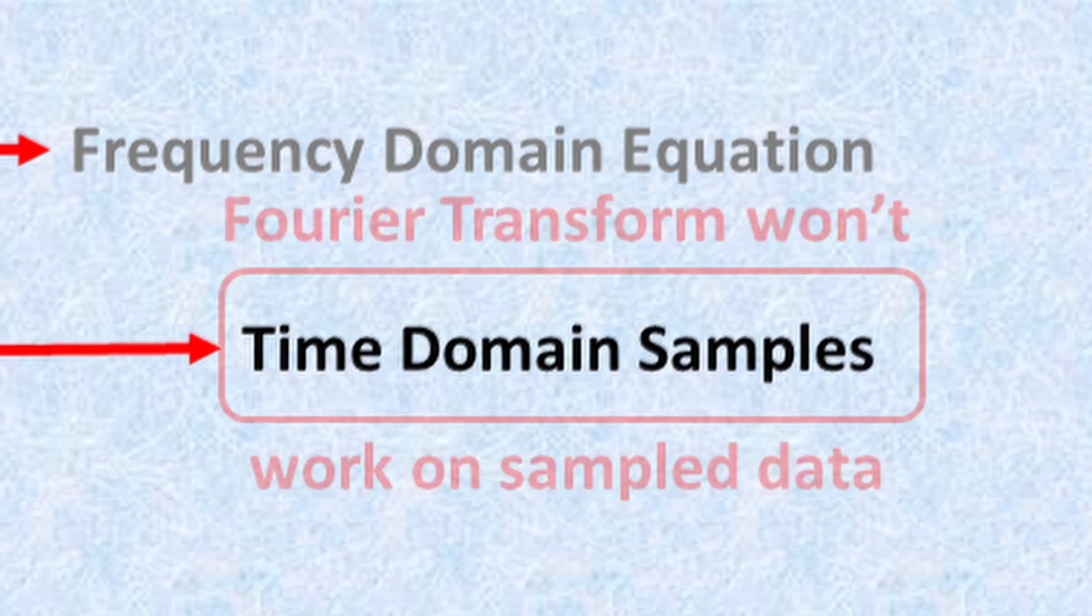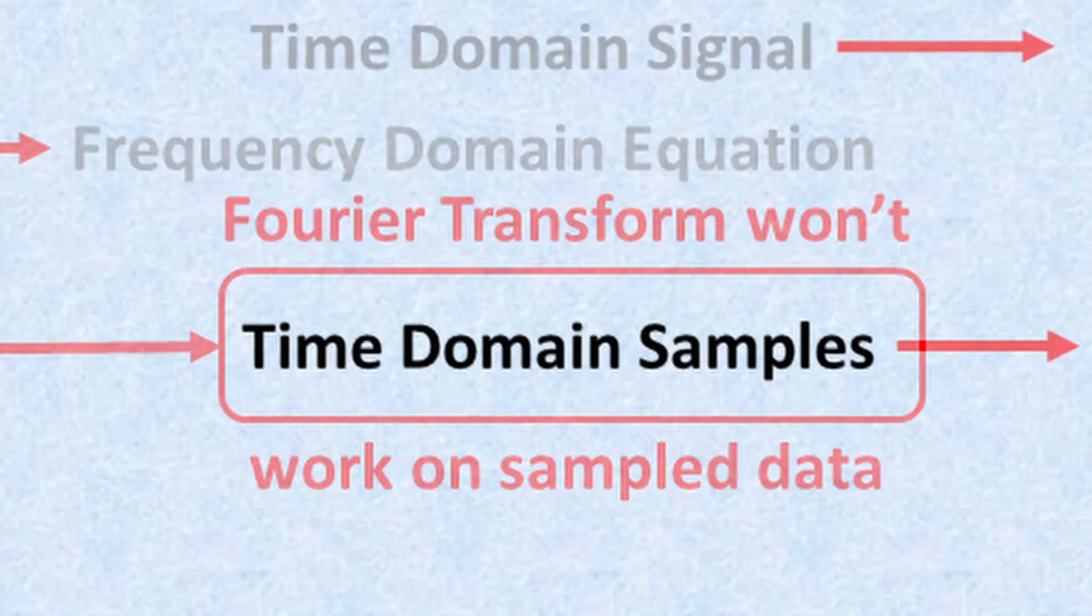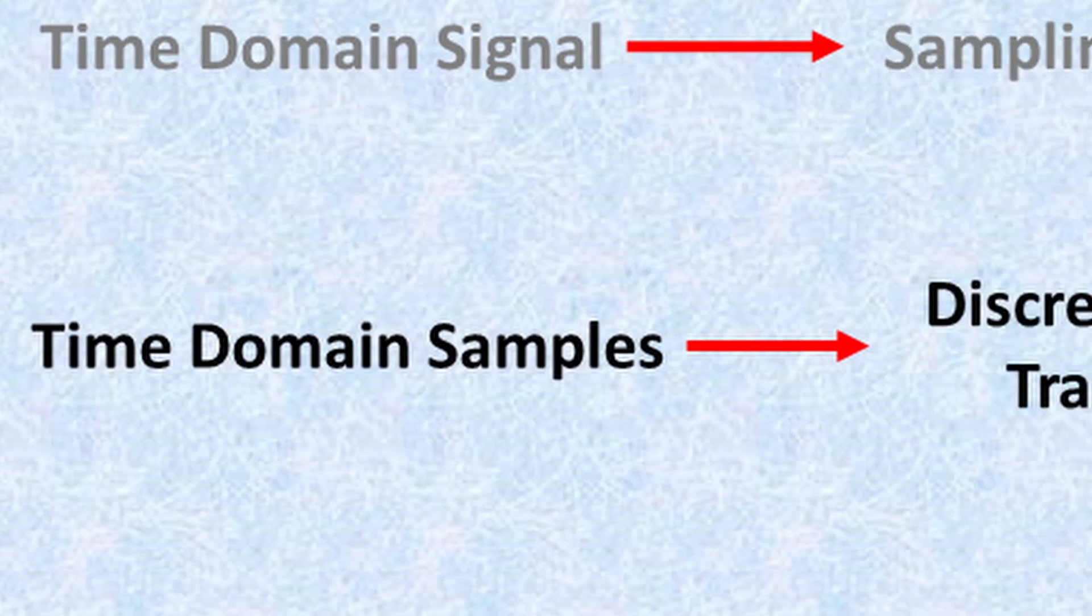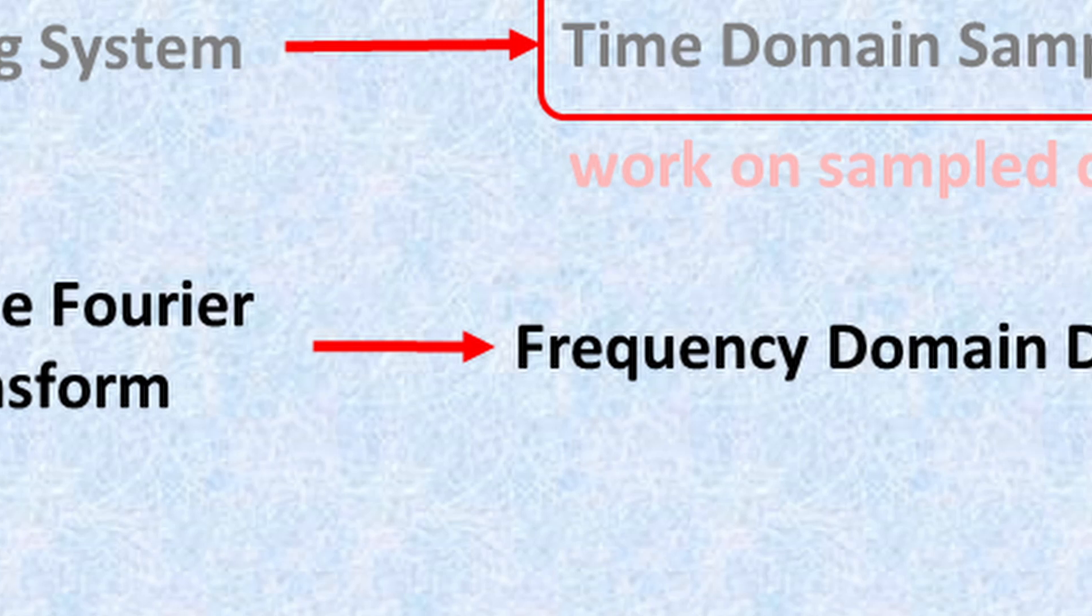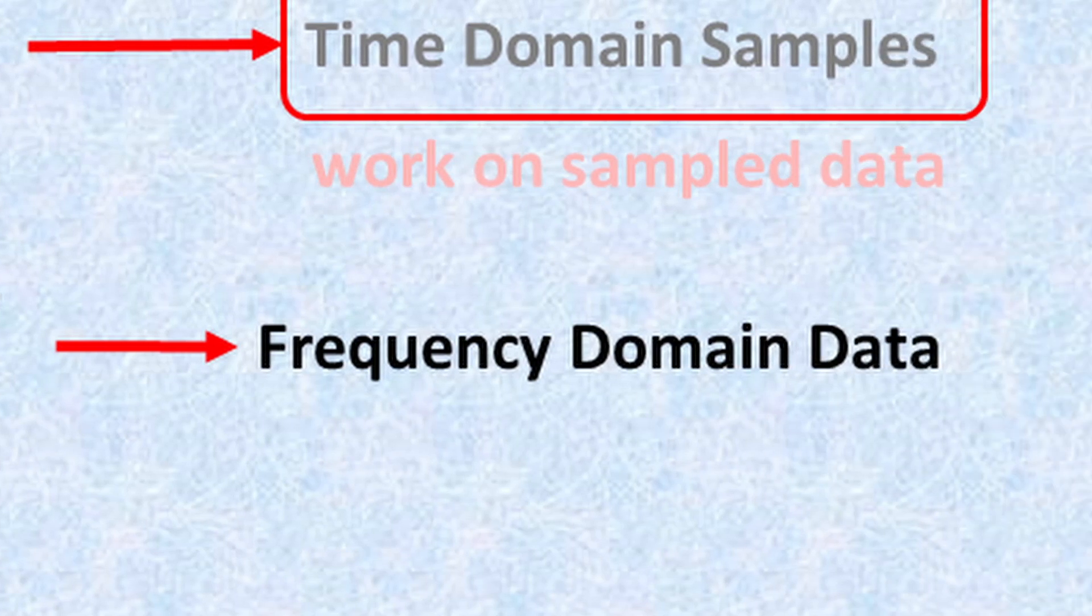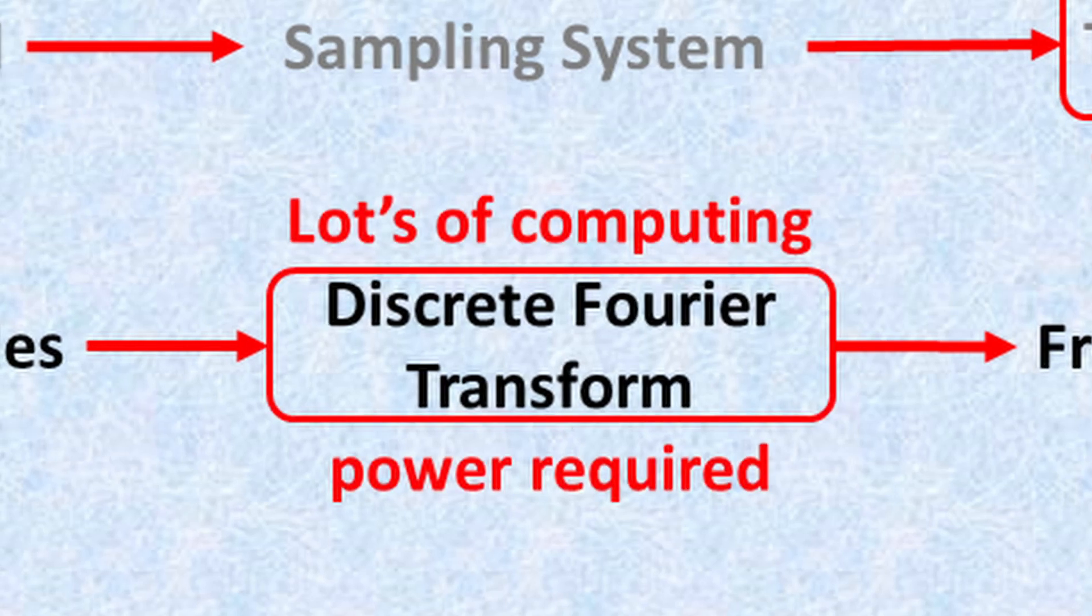The problem is the Fourier transform does not work on sampled data in its original form. However, some really bright mathematician came up with the discrete Fourier transform, which uses sample time domain data to provide frequency domain data. But this doesn't completely solve our problem because the discrete Fourier transform requires a lot of computing power to produce results.